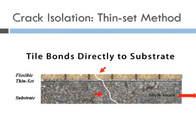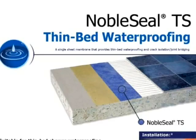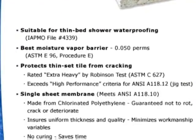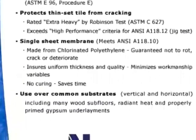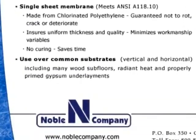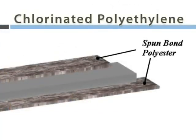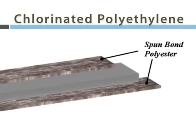So when a concrete floor cracks, that force is telegraphed to the tile, causing it to crack. Even hairline cracks of 1/32nd of an inch can cause cracking. Noble Company was one of the first with an answer to this problem. In 1984, they introduced Noble CLTS, a composite sheet membrane that provided waterproofing and crack isolation for thin-bed tile installations.